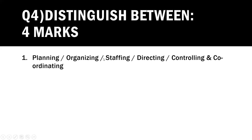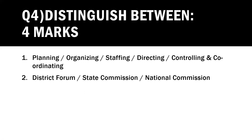Prepare planning, organizing, staffing, directing, controlling, and coordinating distinguishes very well, because one pair from these six is a sure-shot question in the exam — never put this in your options. The next important distinguish is District Forum versus State Commission versus National Commission. Again, any one pair from these three will be asked. So from these two lessons, two of your three required distinguishes are practically guaranteed.